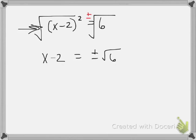And then I need to add 2 to both sides. So I'm adding 2, and I get x equals 2 plus or minus the square root of 6.